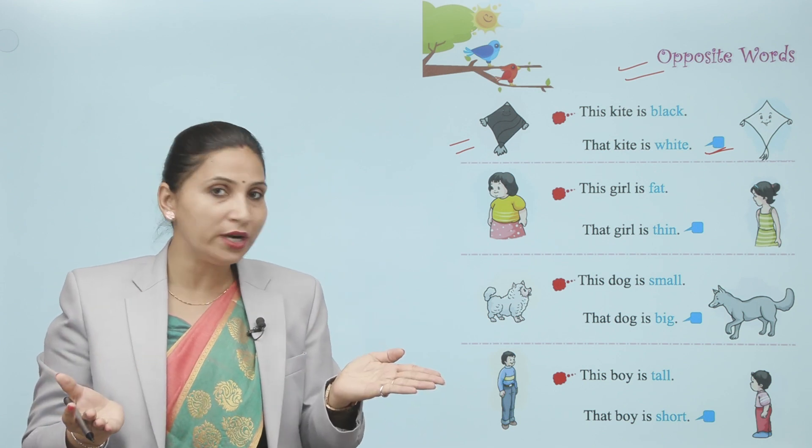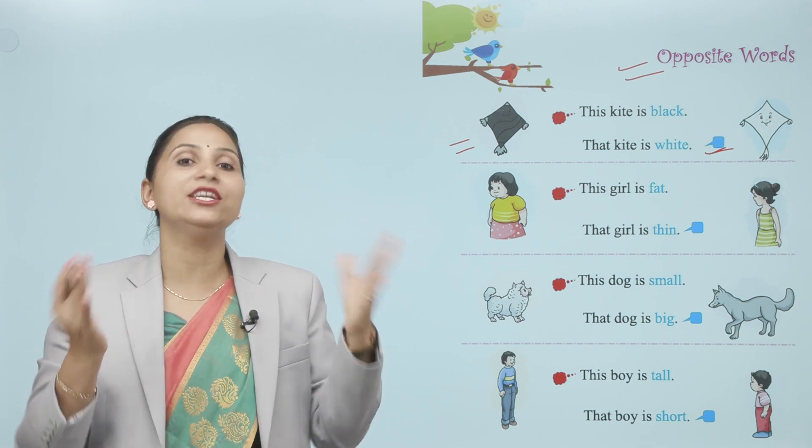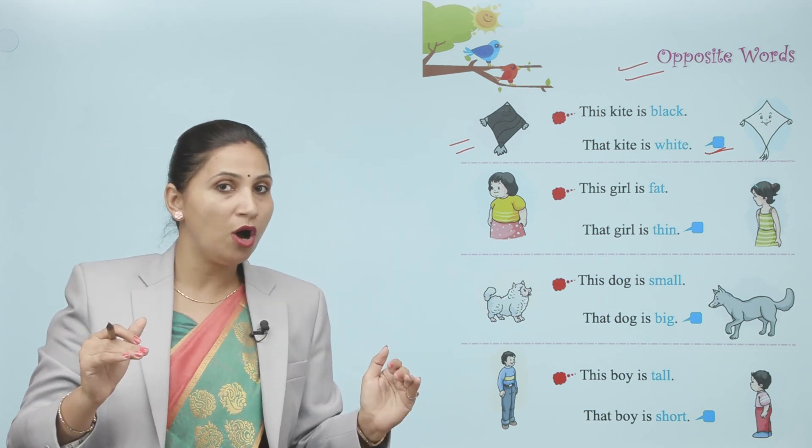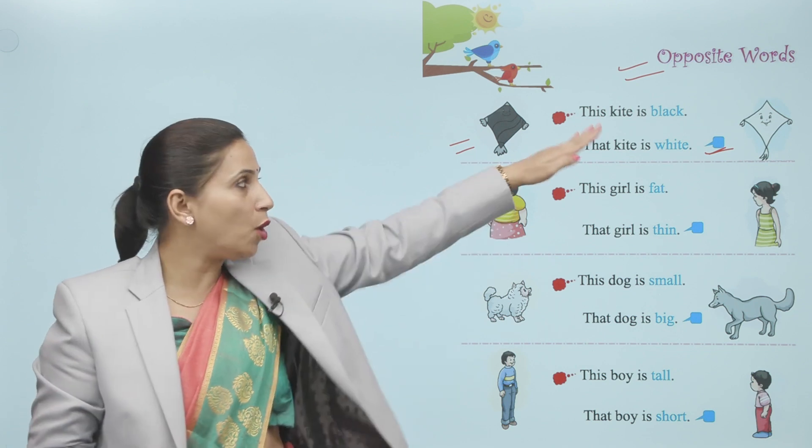Opposite word. So tall and short. Big and small. So you can see it in the blue in color.